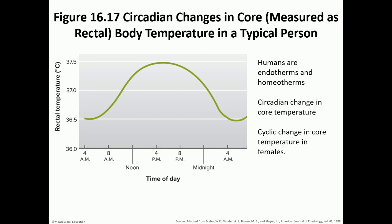Moving to the differences in body temperature throughout the day — the circadian rhythm of body temperature. There is a homeostasis around it where it fluctuates: our bodies are coldest around 4 a.m., then temperature rises gradually due to cortisol, epinephrine, and increased metabolism, peaking around 4 to 8 p.m., then gradually decreasing through the night. This circadian rhythm correlates with the circadian rhythm of cortisol.